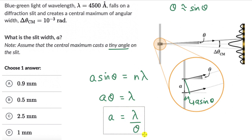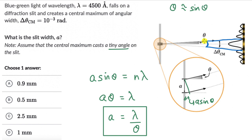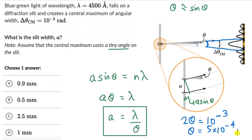The central maximum is casting a total angle of 10⁻³ radians. Looking at the diagram, this total angle spans both sides of the central maximum, so it equals θ + θ = 2θ. Therefore 2θ = 10⁻³ radians, which gives θ = 5 × 10⁻⁴ radians.